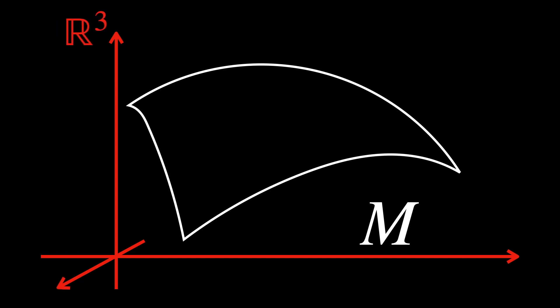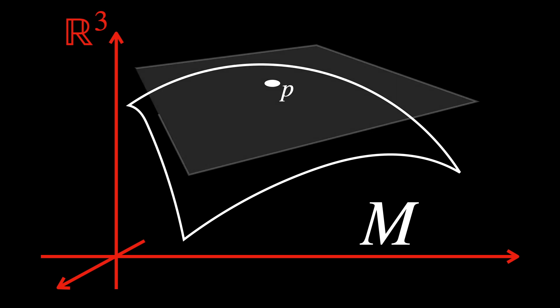Say we pick a point P and want to draw something equivalent to a tangent line but in two dimensions. We would, therefore, draw a tangent space. In this case, it looks like a flat plane just touching the point in exactly one place.